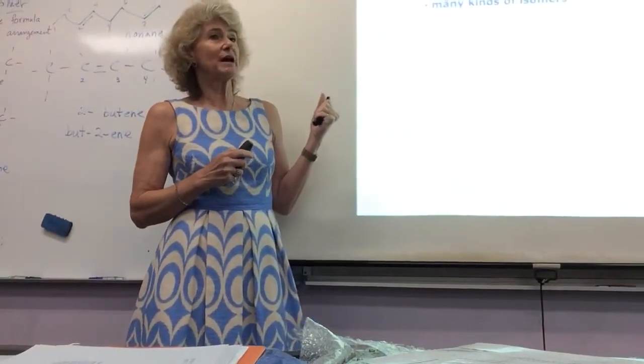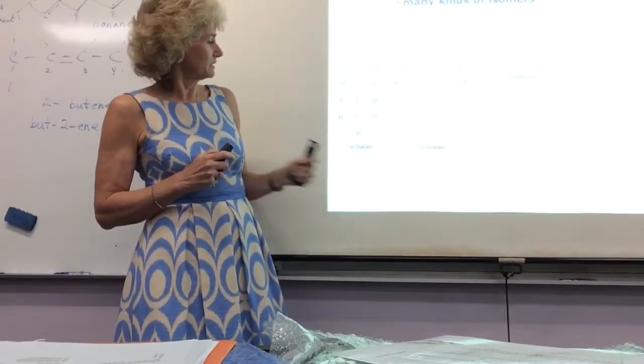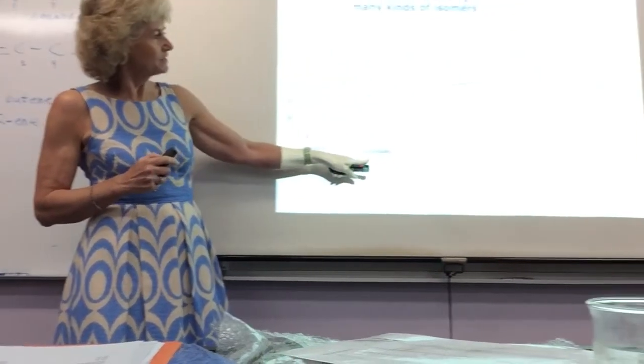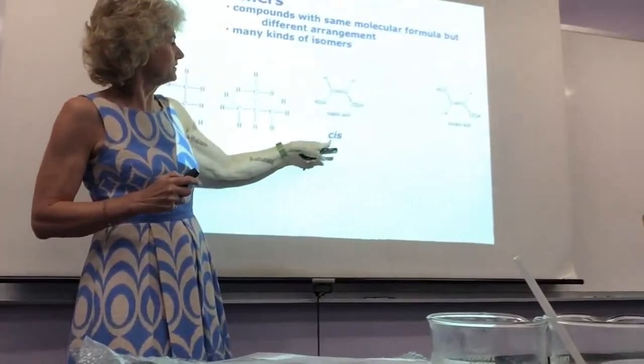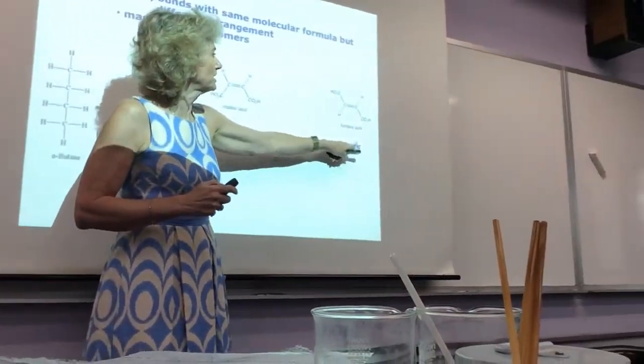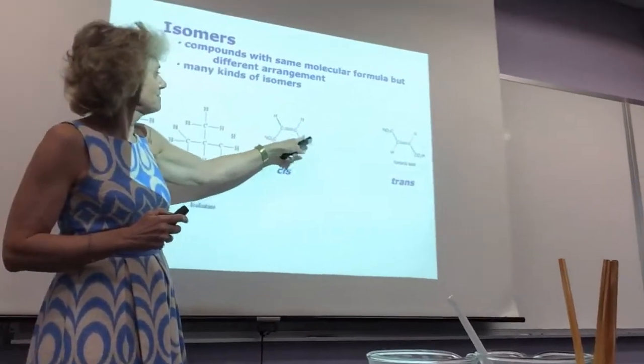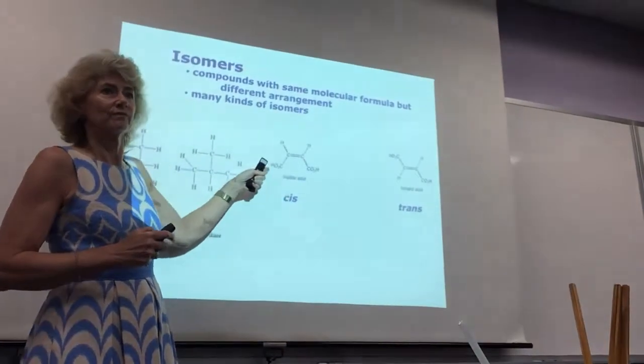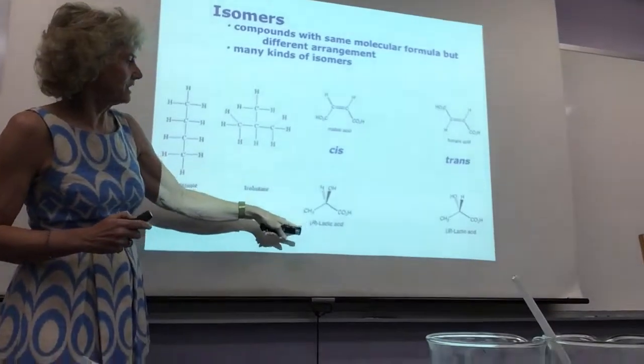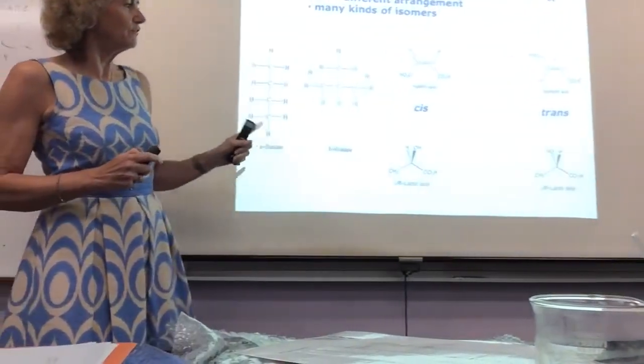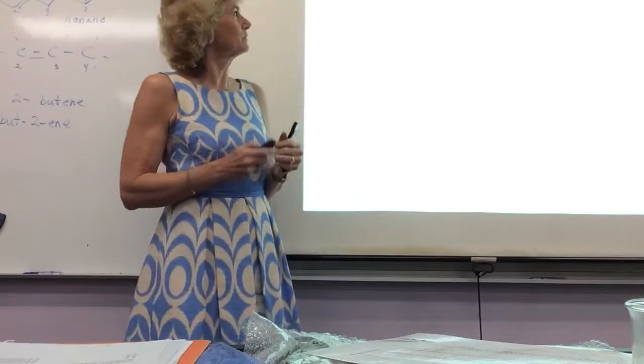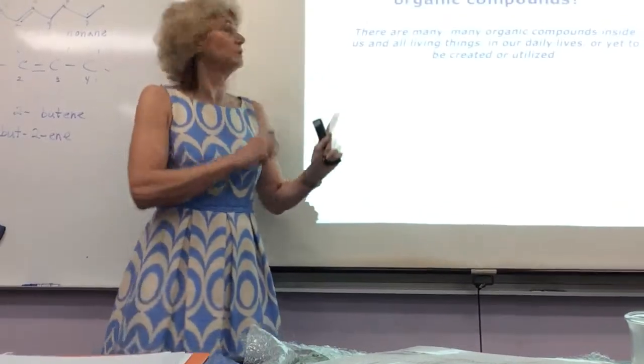I already told you about isomers. So this is normal butane, isobutane. Maleic is called the cis, and fumaric is trans. Notice how these are across. This means across. This means same. Here's lactic and R and S lactic. There are two different chemical reactions, or chemical compounds. So why do we care about organics? Wait. I have to show you this.